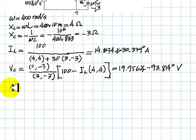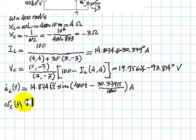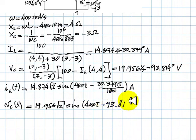Now, those voltages and currents as functions of time are easy to write. 14.874 root 2 sine 400T. Frequency is the same, minus 30 degrees and something. We write that as radians, of course. And the voltage in the capacitor has a peak value of this multiplied by root 2. And I convert that to radians.